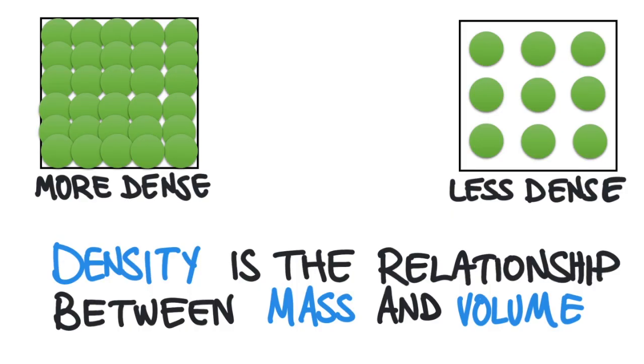Density is a relationship between the mass and the volume of an object. Mathematically, it's the ratio of the mass of an object to its volume and it's represented by this equation. There are three variables in this equation. When we know two of them, we can always solve for the third.